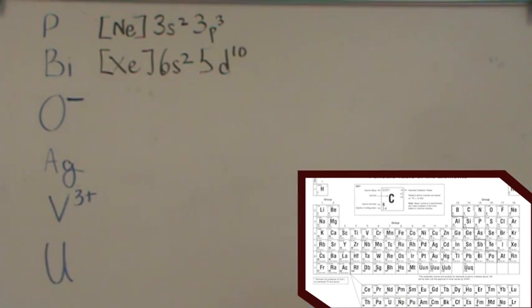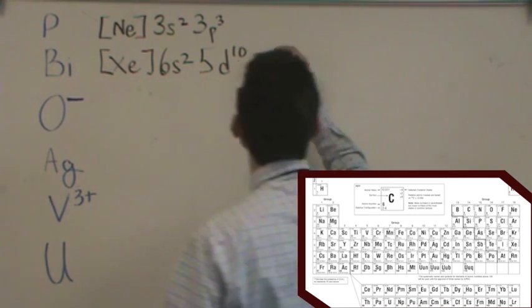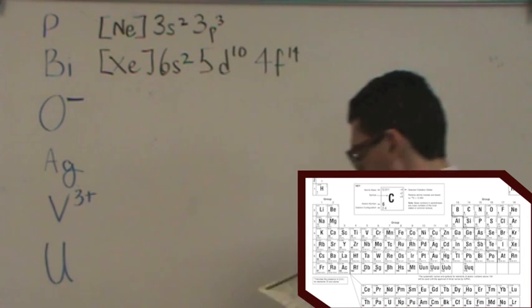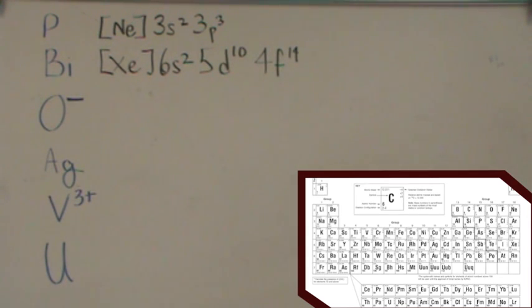But notice what happens when you do that. Because you're going to go through lanthanum, you're also going to go through all the lanthanides. So you'd have a 4F14 in this as well. Because notice, you're going from number 57 through 71, and then from 72 over to 80.